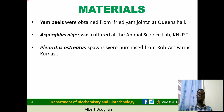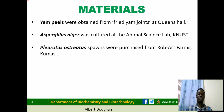YAM peels were obtained from the fried YAM joints at Queensall, one of the halls at Kwame Nkrumah University of Science and Technology in Ghana. Aspergillus niger was cultured at the animal science lab at the same institution, and Pleurotus ostreatus spawns were purchased from Rob Art Farms, located in Kumasi.